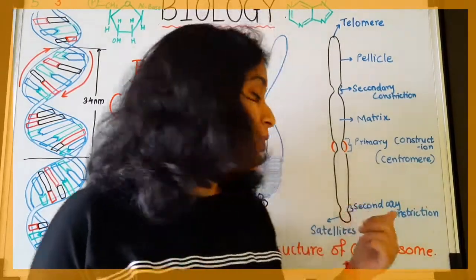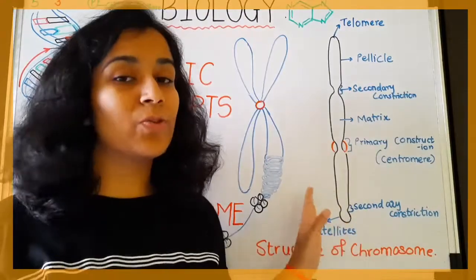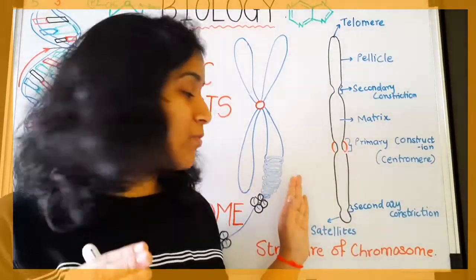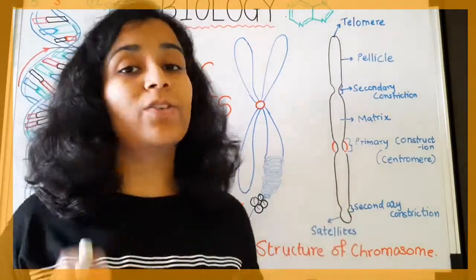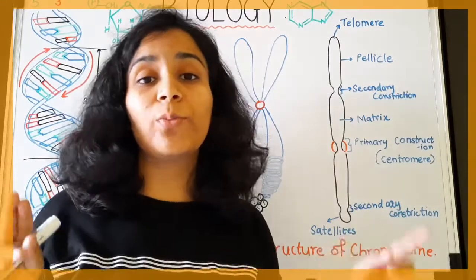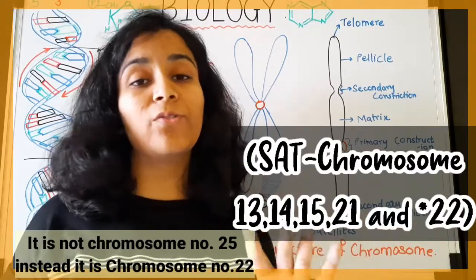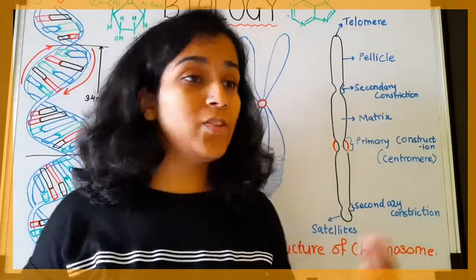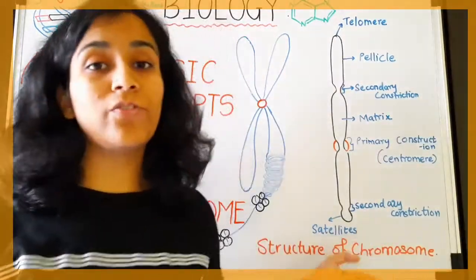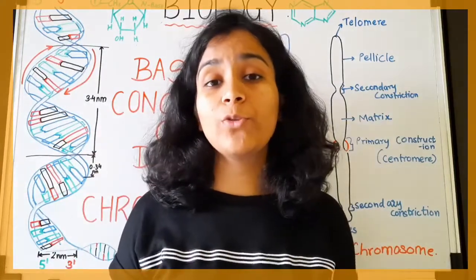The nerve-like structure on the chromosome is known as the satellite. If a chromosome has such a satellite, those chromosomes are known as SAT chromosomes. For example, chromosome numbers 13, 14, 15, 21, and 22 are most probably known as SAT chromosomes. That covered the structure of the chromosome — now let's move on to the types of chromosomes.